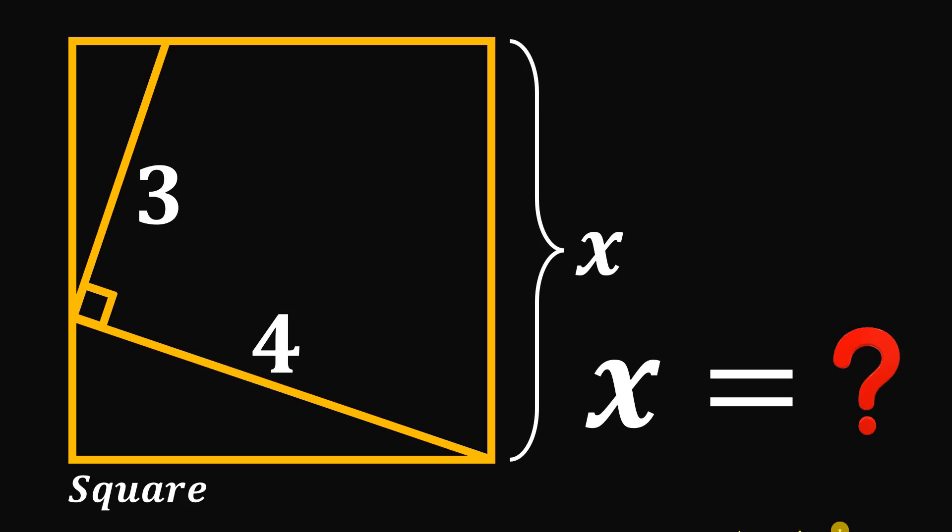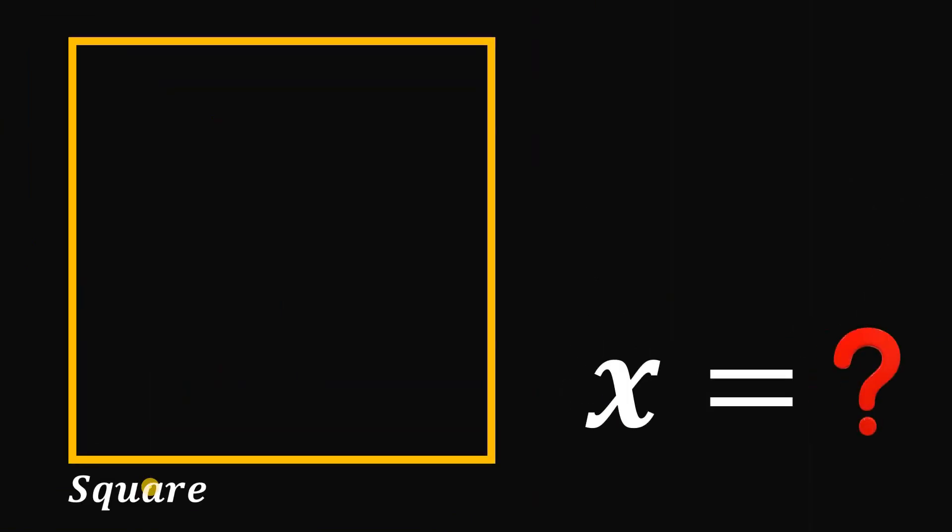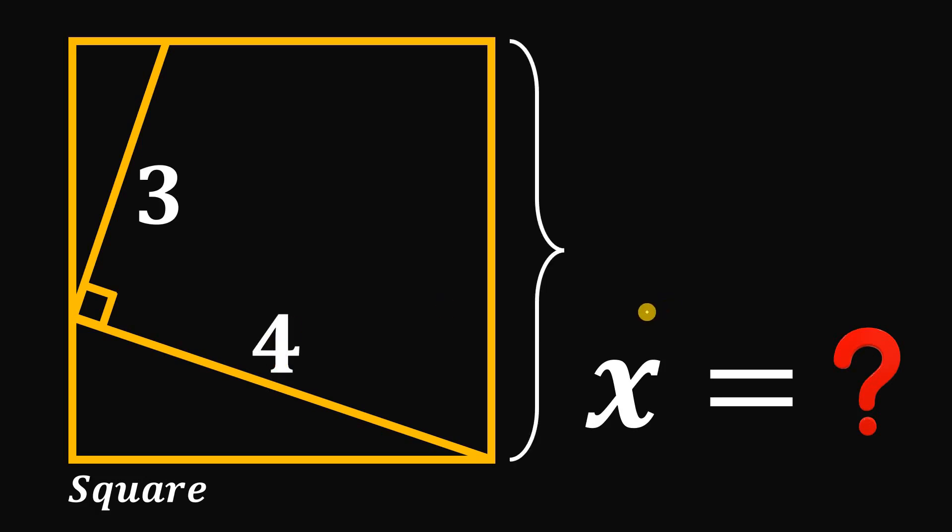Can you solve this geometry challenge? Here's the question. Given this square, let's draw two perpendicular segments that touch to the side of this square. This segment measures three units and this segment measures four units.